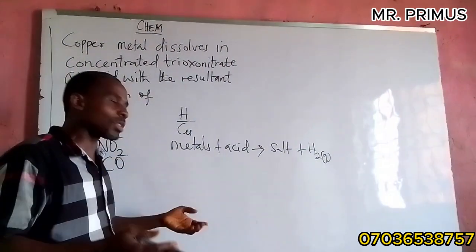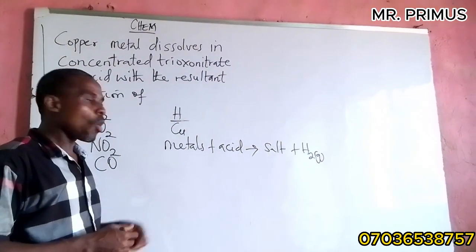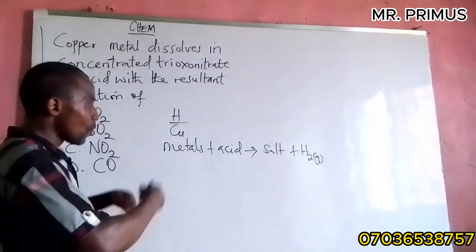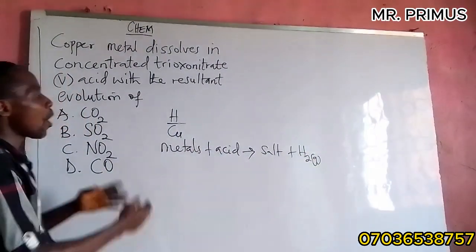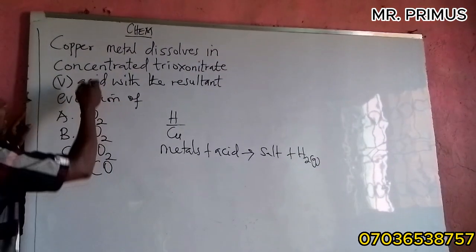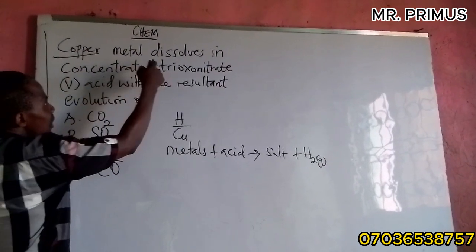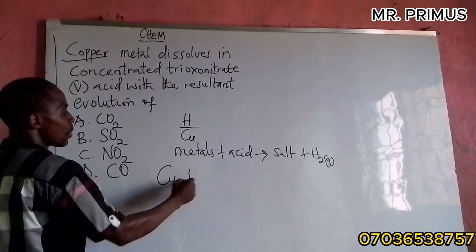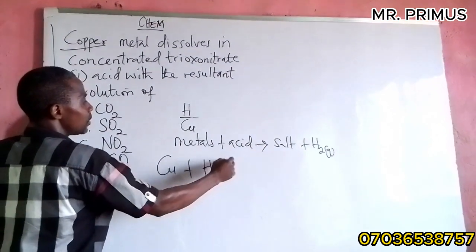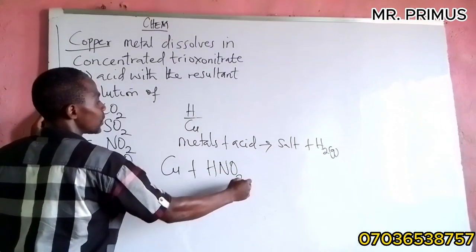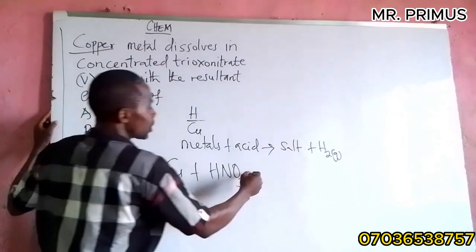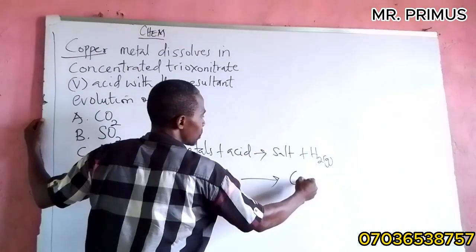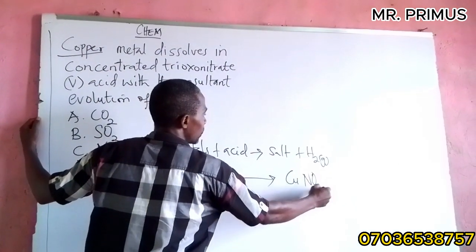Copper is weaker than hydrogen. Therefore, it cannot displace hydrogen when it reacts with any acid. Now what we are going to have is a balanced equation between copper and nitric acid (HNO₃). Copper plus HNO₃ will give us a product. Copper will give us Cu(NO₃)₂ as a salt.